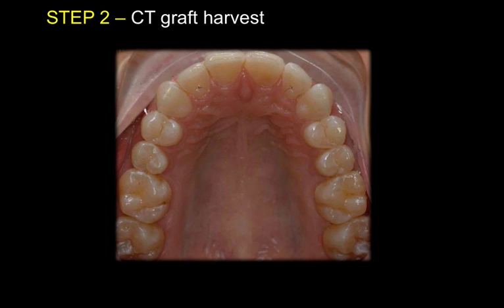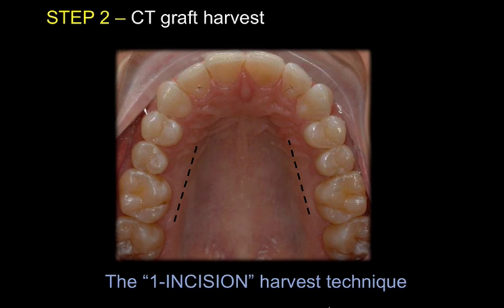Step number two is harvesting a connective tissue graft. The ideal site is the palatal aspect of the premolars and the molar — that's where the connective tissue layer is at its thickest and it's also safe, at a safe distance from the greater palatine bundle. I'm going to show you the one incision technique, which is actually made out of six incisions. We call it the one incision technique because on the surface it looks like one incision. Guy, this is for you — you asked me about how I harvest a connective tissue graft from the palate.